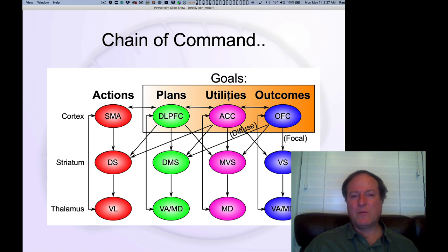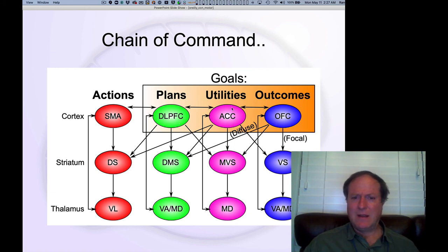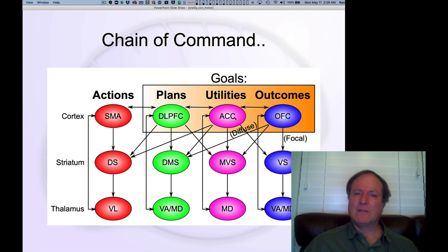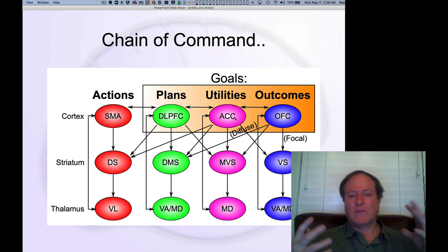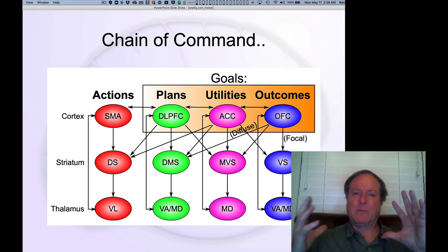Utility is a little more abstract, intermediating between the desired outcomes represented in the orbital frontal cortex and the plans — the ways of getting those outcomes. For example, if I want a chocolate milkshake, I have to get in the car and drive to In-N-Out Burger, which is a lot of work, and it's late at night and not even open. So the utility part of the brain in the anterior cingulate cortex considers costs, feasibility, and negative downsides, integrating that with the value of outcomes to give an overall estimate of how good a plan really is.